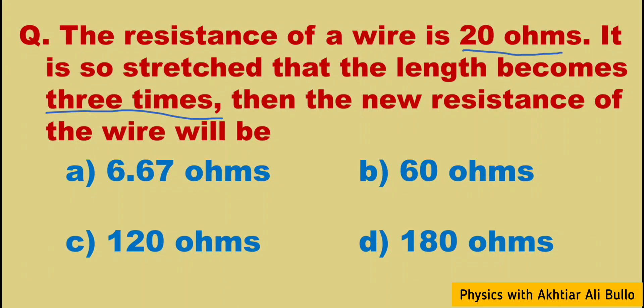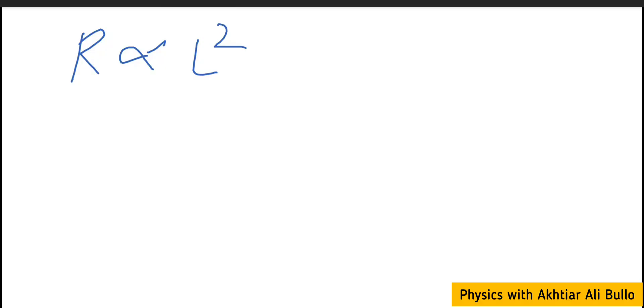As the resistance is directly proportional to the square of the length of the stretched wire, so when the length is increased by three times, then resistance will be the square of 3, which is 9. So resistance will be increased up to nine times.